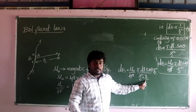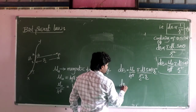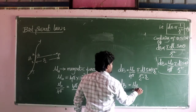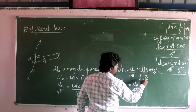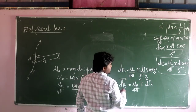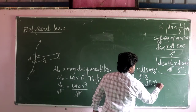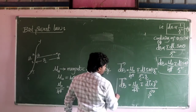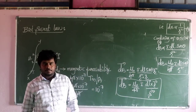So r divided by r gives r-cap. Therefore, dB is equal to mu0 divided by 4pi, multiplied by i, with dl as a vector and r as a vector, divided by r into r. This is the vector form of the Biot-Savart law.